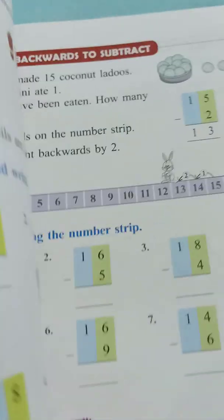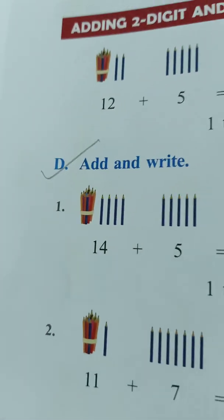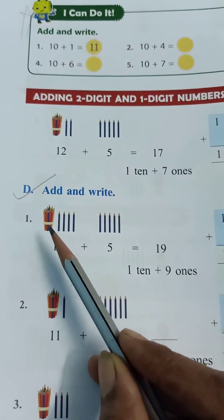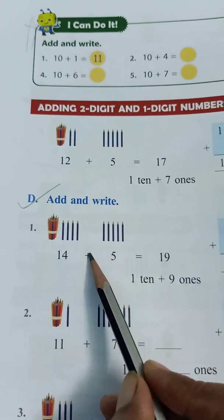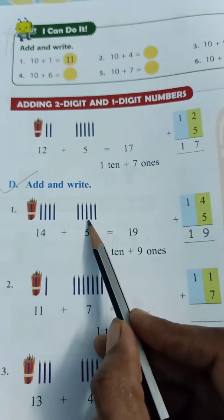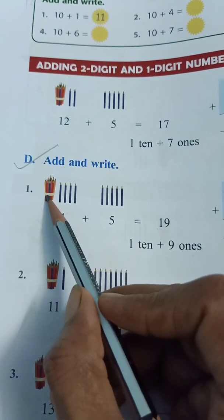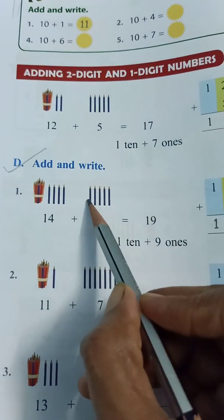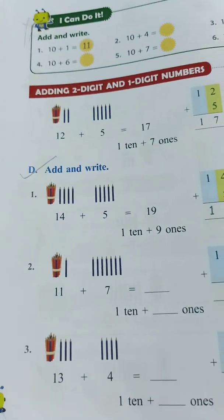Now page number 64. D, add and write. Here 10 plus 1, 2, 3, 4, total 14. Plus 1, 2, 3, 4, 5. 14 plus 5 is equal to. Now we will count. This is a bundle of 10, 11, 12, 13, 14, 15, 16, 17, 18, 19. Total 19.